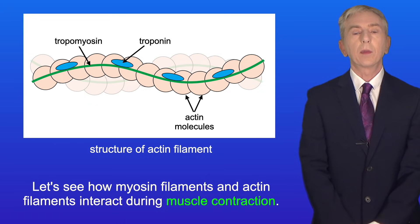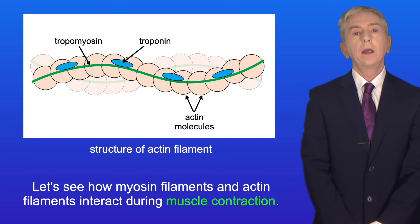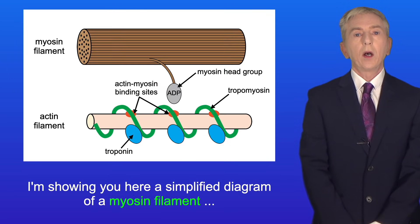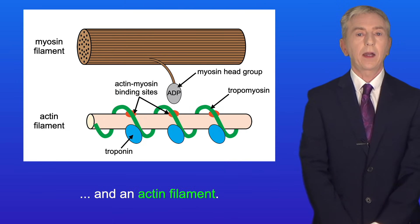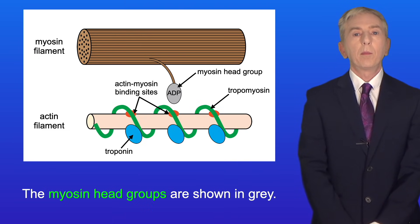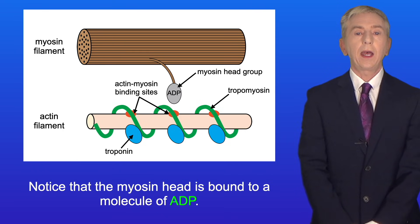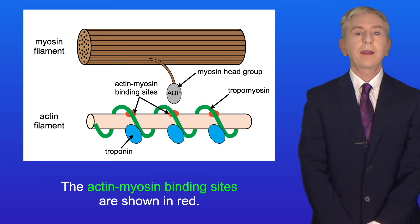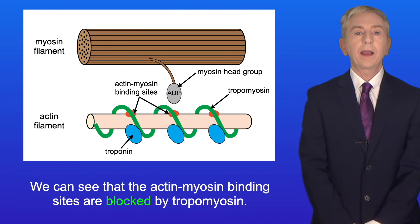Let's see how myosin filaments and actin filaments interact during muscle contraction — you need to learn all of these stages. I'm showing here a simplified diagram of a myosin filament and an actin filament. The myosin head groups are shown in grey, and notice that the myosin head is bound to a molecule of ADP. The actin-myosin binding sites are shown in red, and we can see that they are blocked by tropomyosin.